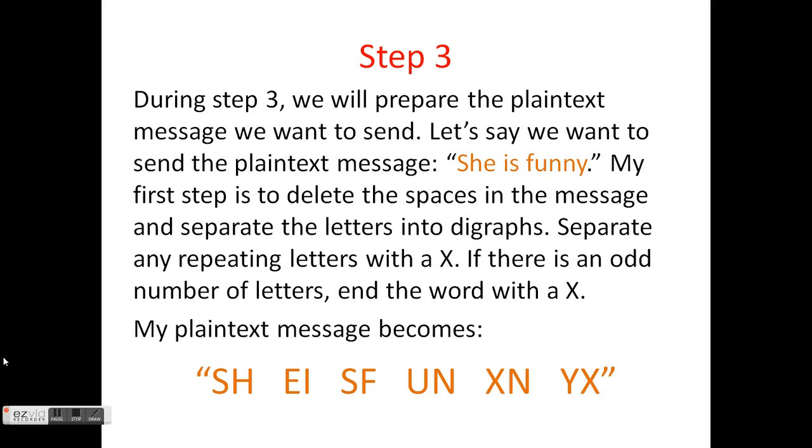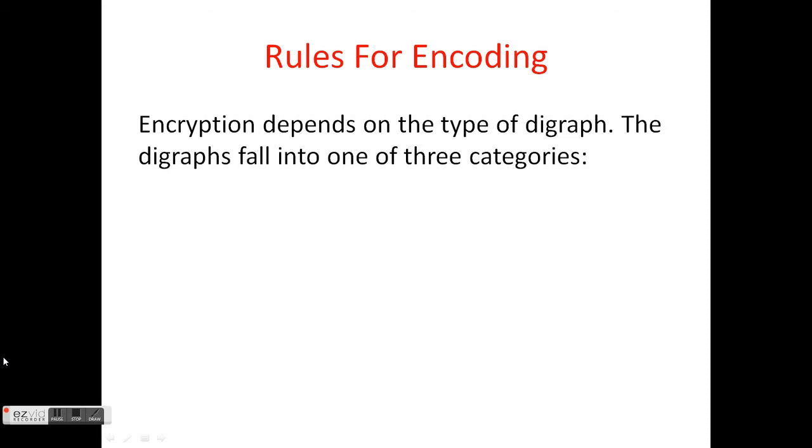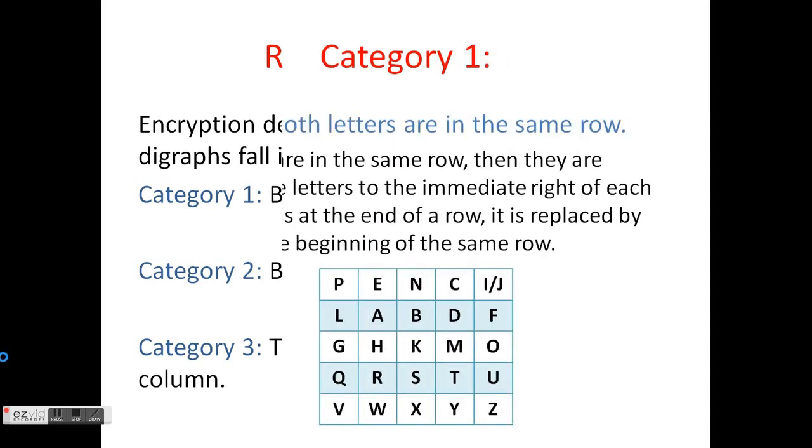Now my message is ready for enciphering. There are three possibilities that we can run into while using this cipher. Both letters in the digraph are in the same row in the 5x5 table I created. Both letters in the digraph are in the same column in the 5x5 table I created. And both letters in the digraph are neither in the same row nor the same column. Let me give you an example of each.